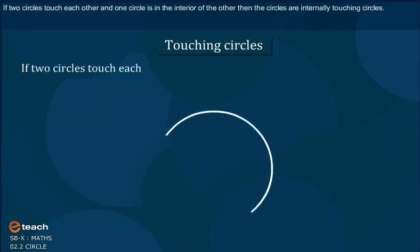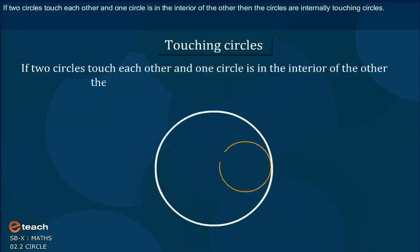If two circles touch each other and one circle is in the interior of the other, then the circles are internally touching circles.